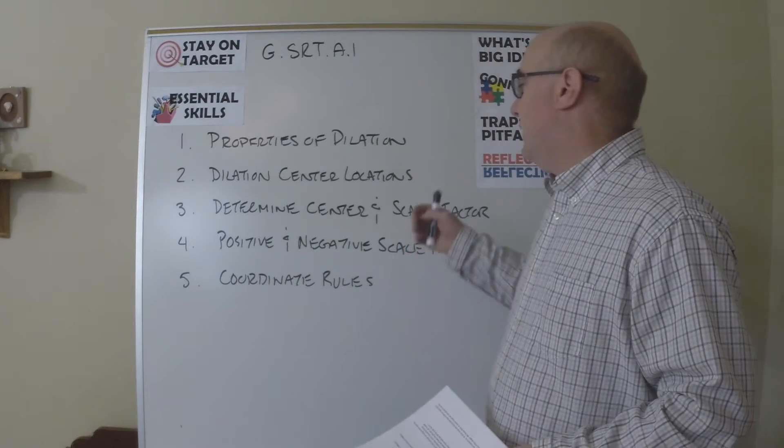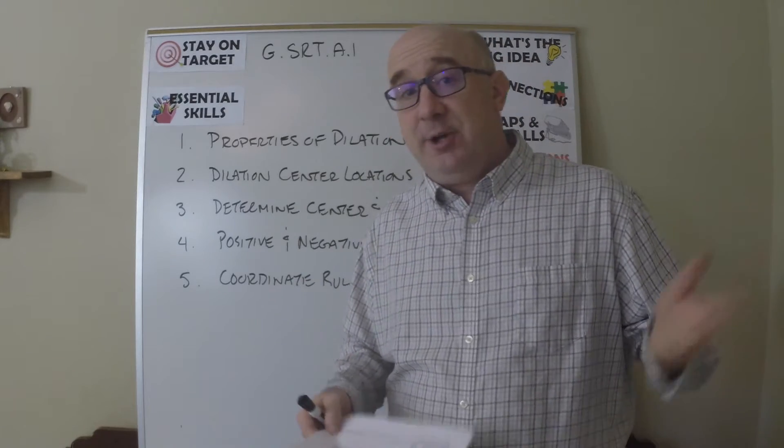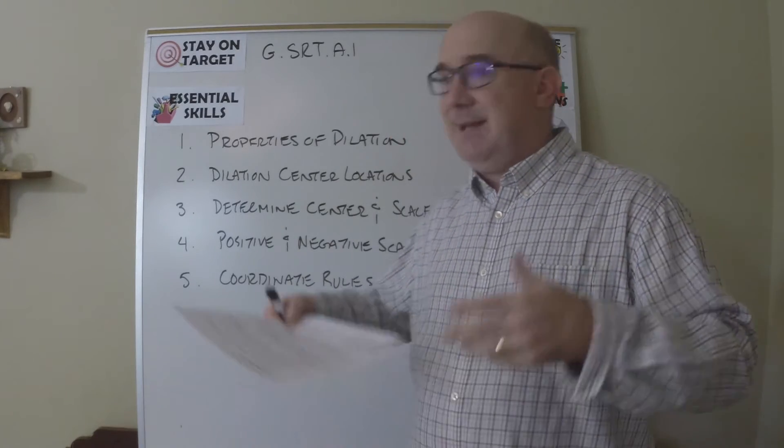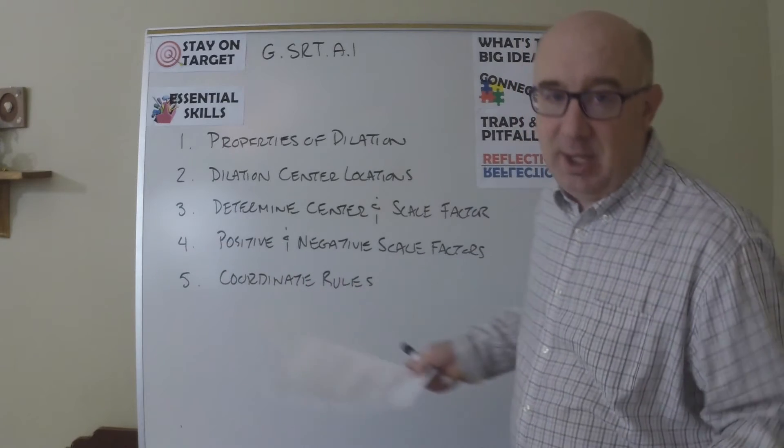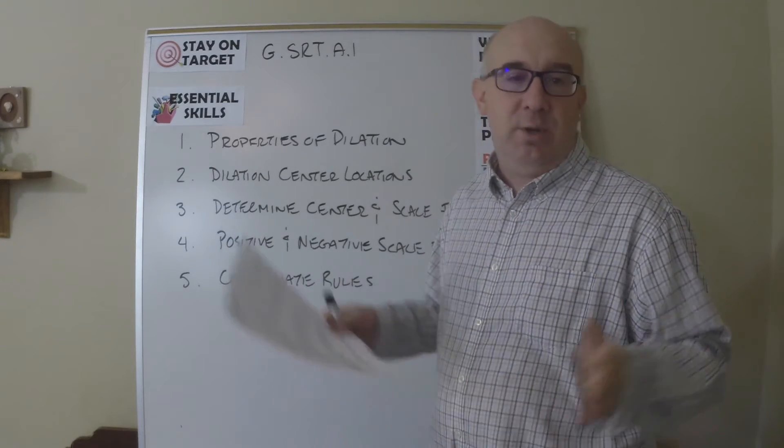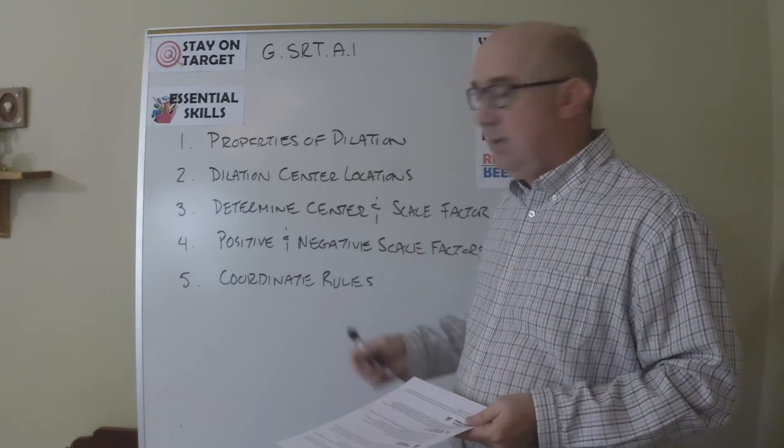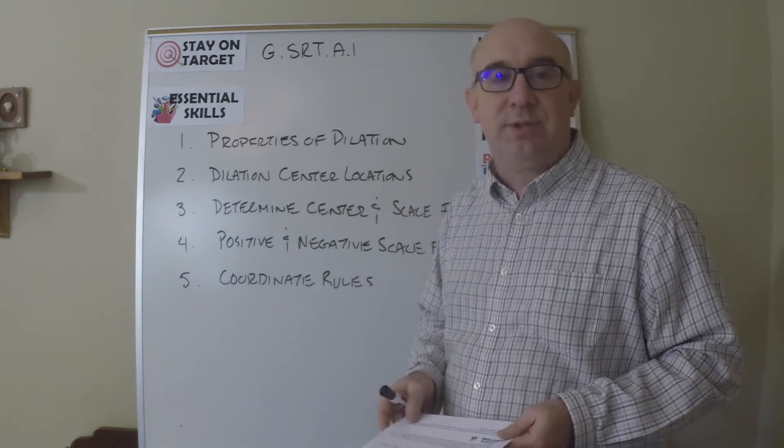You look at the center and scale factors. When we scale by a value greater than one we get bigger or an enlargement. When we scale between zero and one we do a reduction. We look at negative and positive values and then we talk about the coordinate rules for dilation.